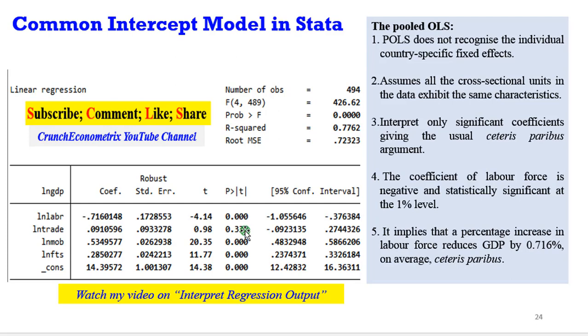You interpret only the significant coefficients. Do not interpret if a coefficient is not significant. Unless it is your key explanatory variable which turned out not to be significant. That is the only reason why you should interpret a coefficient that is not significant. In this case, trade is not significant, so I won't be interpreting it.